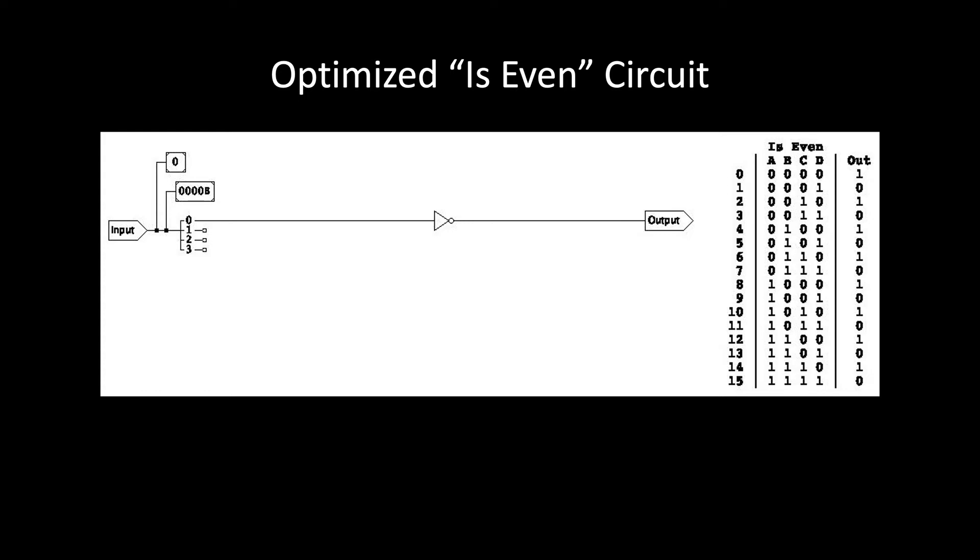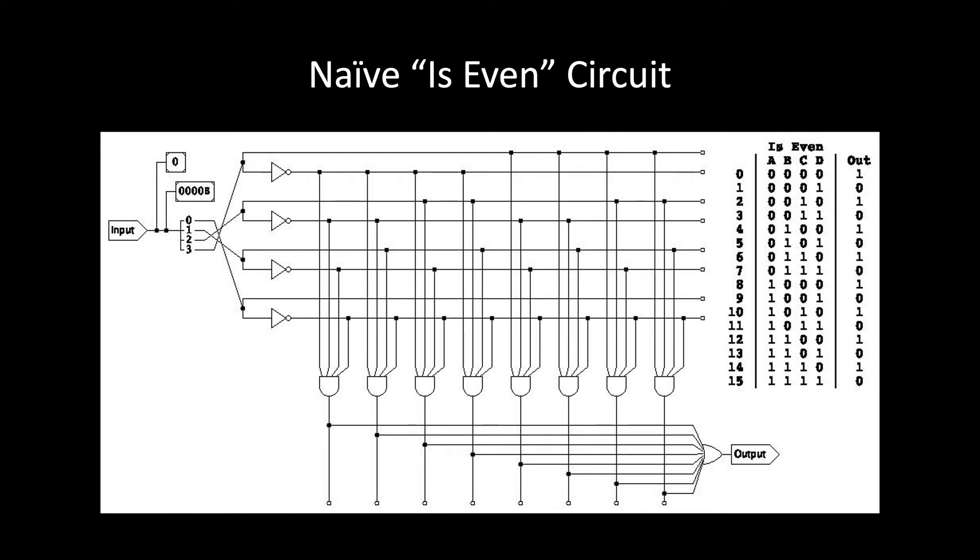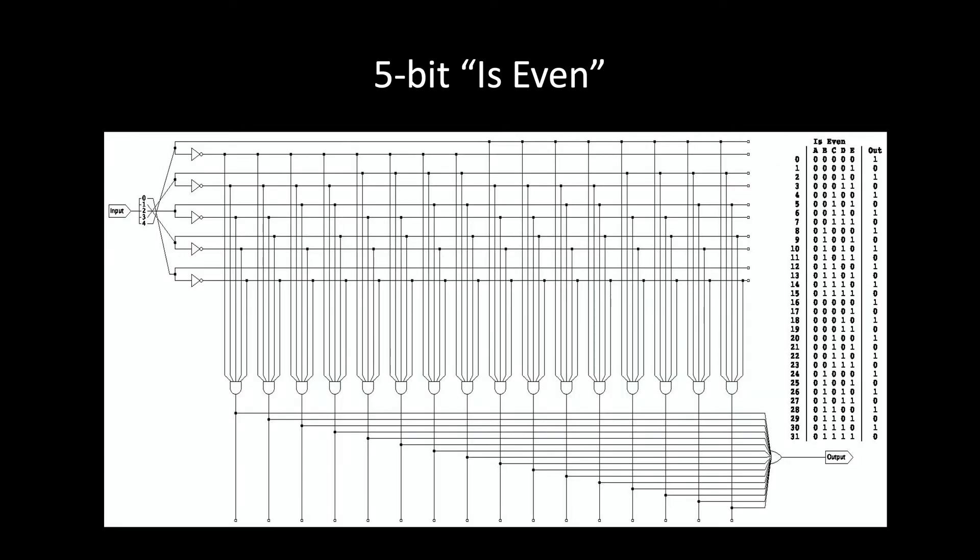Let's think about how the size of the circuit grows as the number of inputs grow. So let's look back at the original version of that is even circuit, and it has four input pins, which means we can give it numbers between 0 and 15. If we want to be able to give it larger numbers, we need more input pins. So if we add a fifth input pin, we can now give it numbers between 0 and 31. But the truth table now has twice as many rows, and the circuit now has twice as many AND gates.